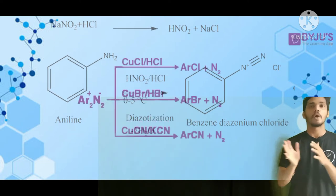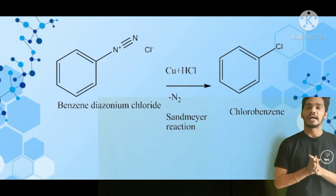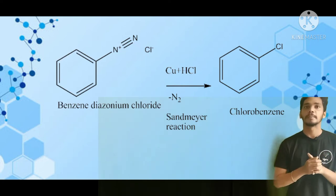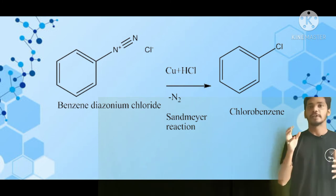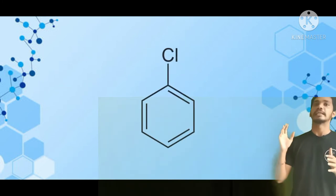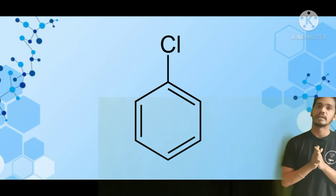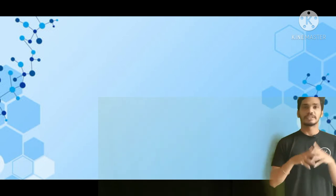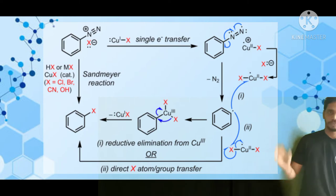With the help of copper as a catalyst — for example, you have an aryl amino group that is converted with the help of CuCl along with HCl. When you do this, you will get chlorine attached to the aryl group. This is how the Sandmeyer reaction happens. Now let's see the mechanism of the Sandmeyer reaction.